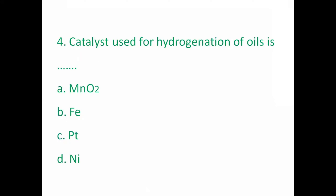Catalyst used for hydrogenation of oil — in the presence of a catalyst, we can get vanaspati ghee. For that reaction, a catalyst is used. The options are: A) MnO2, B) Iron, C) Platinum, D) Nickel. The right answer is D — Nickel. Catalyst used for hydrogenation of oil is Nickel.